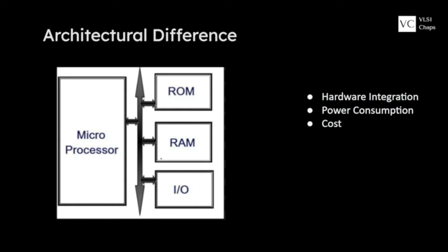Due to this hardware integration difference, two factors are affected: power and cost. In a microprocessor, power consumption is quite high because the external peripherals are likely to consume a lot of power. In a microcontroller, all peripherals are embedded within the chip, so they consume less power. A microcontroller-based system can even run on a battery, while a microprocessor requires a continuous external power supply due to its high power consumption.